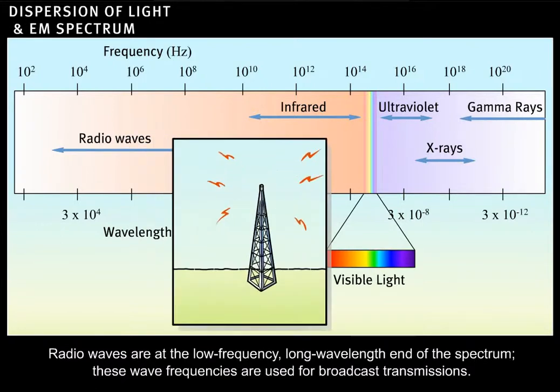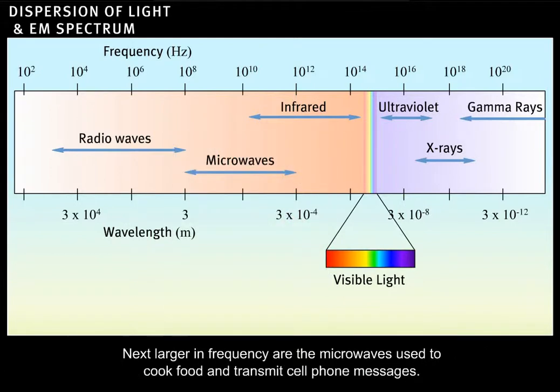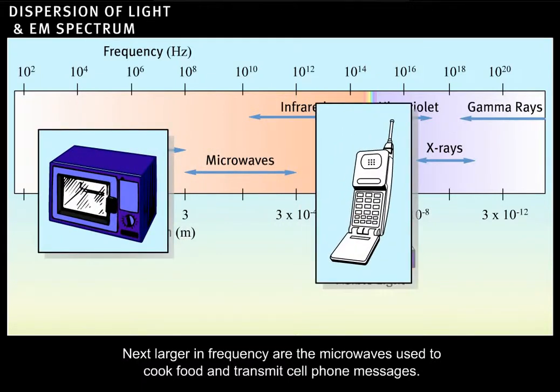These wave frequencies are used for broadcast transmissions. Next, larger in frequency are the microwaves, used to cook food and transmit cell phone messages.